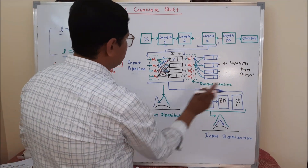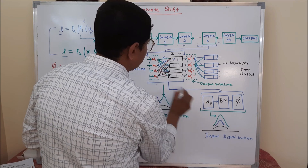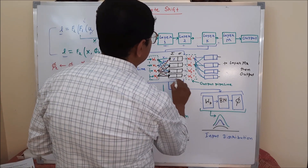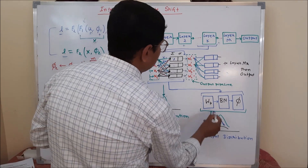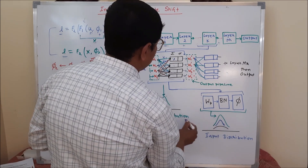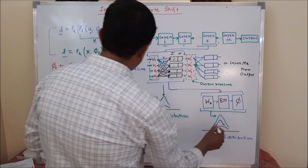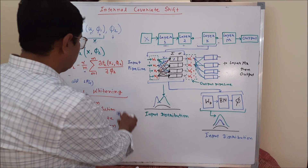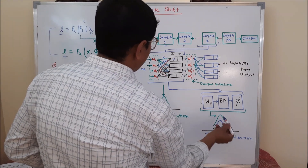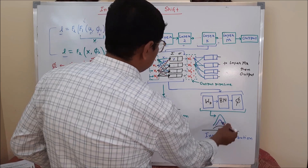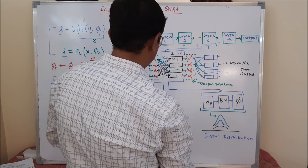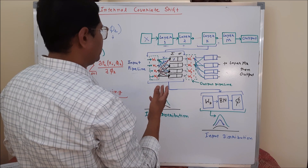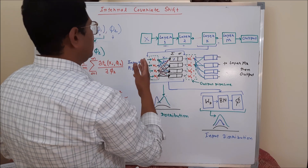In the batch normalization paper, what they did was add a batch normalization step to the input distributions before passing through each layer. You can see that what it results in is that the input distributions after batch normalization come very much near to the ideal network working concepts — not exactly, but close to that. Due to this, the network performs better, you can get better training accuracy, and you can reduce the effect of internal covariate shift.